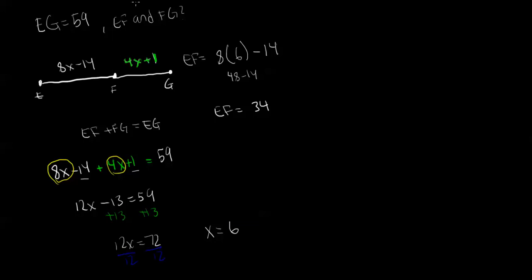Now we have to do the same thing for FG. FG equals 4X plus 1. We plug in 6 for X: 4 times 6 plus 1. Simplifying, we get 24 plus 1, which gives us FG equals 25.